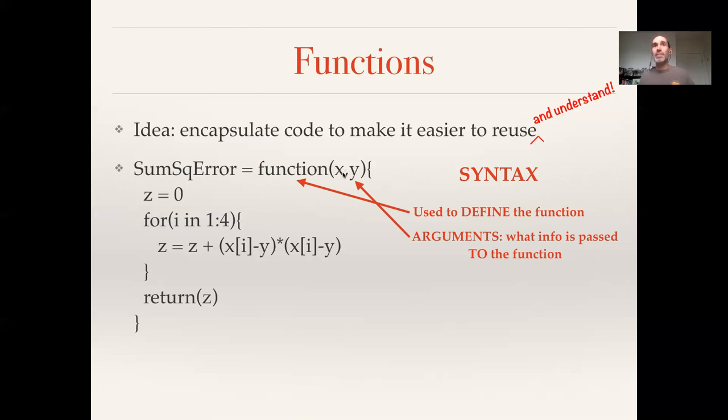And they're just separated by commas. A function could have zero arguments, you could have one, it could have two, you could have hundreds. Generally it wouldn't have hundreds, generally it has a handful, but there's lots of functions that don't have any arguments at all or just have one or two.